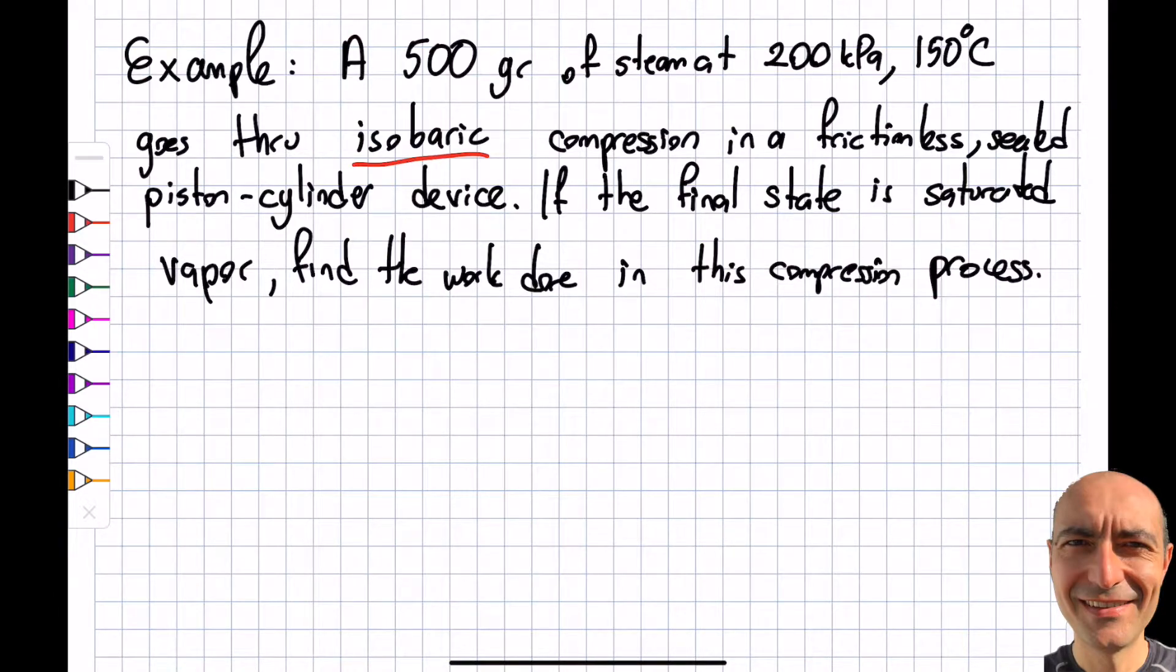This is steam and I have steam tables available to me. I do not want you to use the ideal gas law. I'd like you to use the steam tables whenever I give you some type of steam. As I did in the previous case, I'm going to write my states. I know that state 1 is P = 200 kilopascals and T = 150°C.